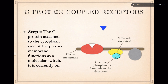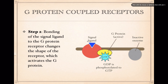In step two, the signal molecule, or ligand, interacts with the receptor's active site, causing a conformational shape change of the receptor protein. When that happens, it can now interact with the G-protein. The G-protein can then be phosphorylated by changing the GDP to GTP, and when that happens, the G-protein is now in its active form. So the signal comes in from outside, causes a shape change, and activates the G-protein — the molecular switch has been turned on.